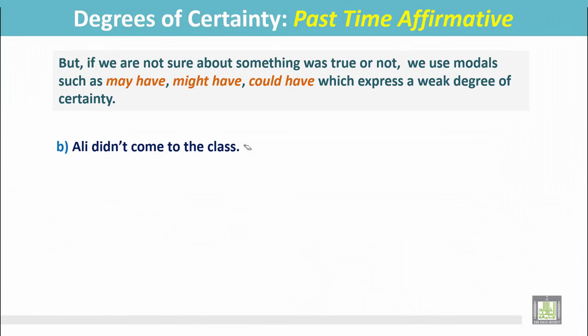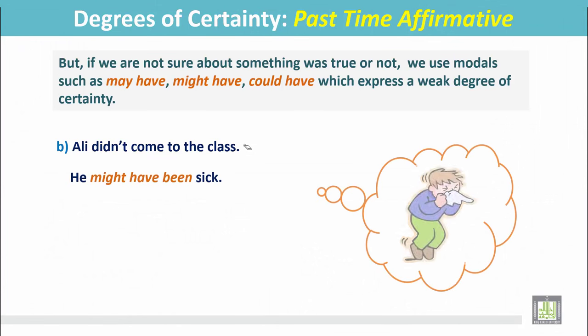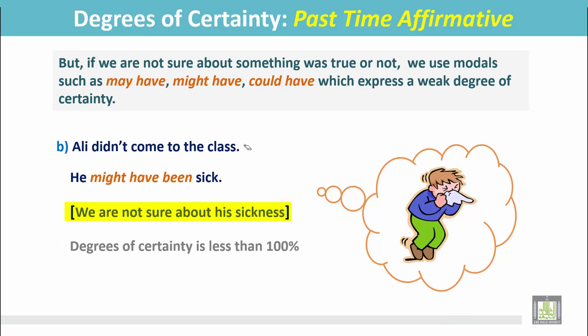Examples: Ali didn't come to class. He might have been sick. This is just a guess, and we are not sure about his sickness. In this situation, degrees of certainty is less than 100%.